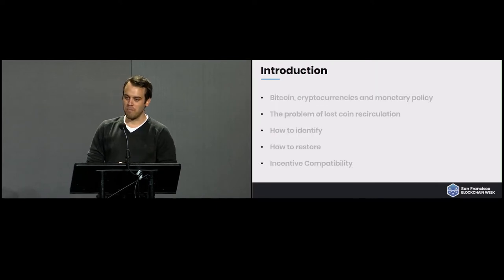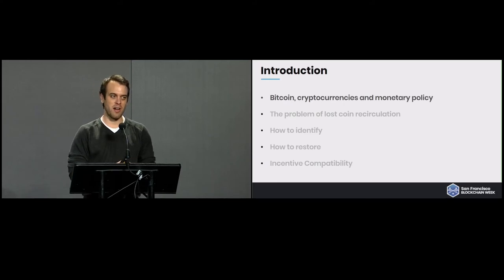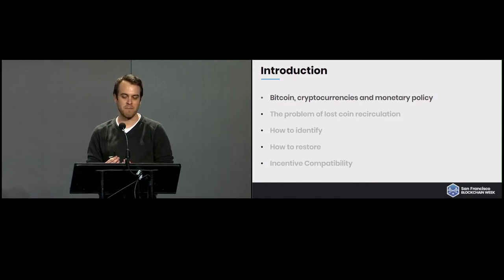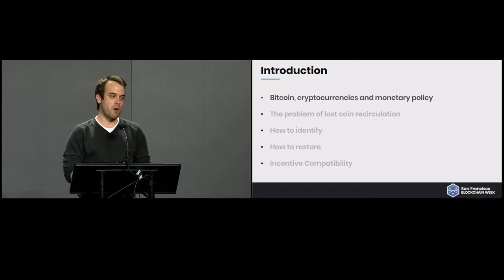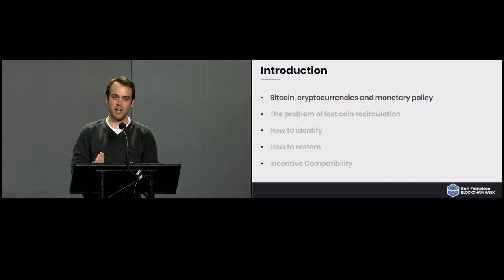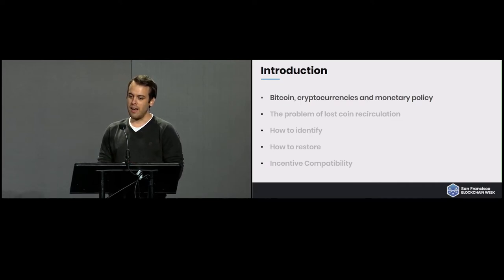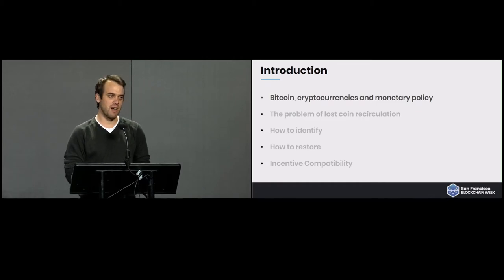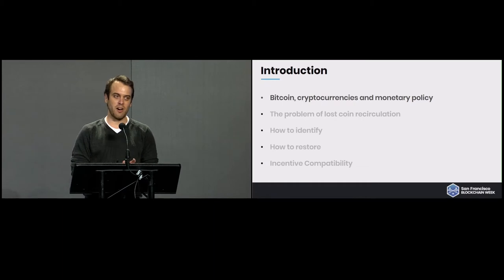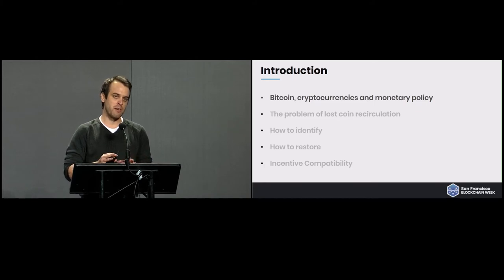A bit of an introduction. First, a word on Bitcoin, cryptocurrencies, and monetary policy. Bitcoin is the first widely accepted decentralized cryptocurrency, and its decentralization means that there's no central body governing it. The problem this raises is in issues of governance — sometimes you have to find answers to problems such as monetary policy: how do you stabilize a coin? An aspect of monetary policy we chose to focus on in this paper was recirculating lost cryptocurrencies, modeled primarily around Bitcoin but transferable to other cryptocurrencies as well.